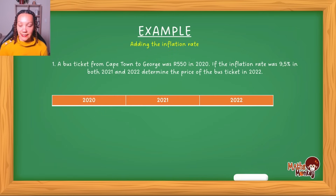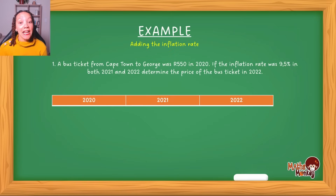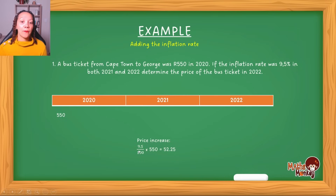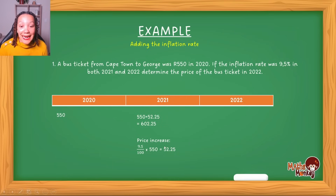Example one: a bus ticket from Cape Town to George is 550 rand in 2020. The inflation rate was 9.5% in both 2021 and 2022. To find 2021's price: 9.5 divided by 100 times 550 gives 52.25, so 550 plus 52.25 equals 602.25. So in 2021 this bus ticket is 602 rand and 25 cents.